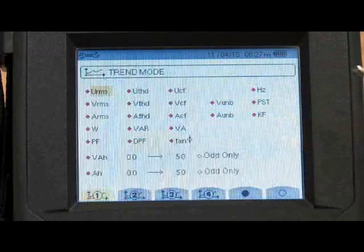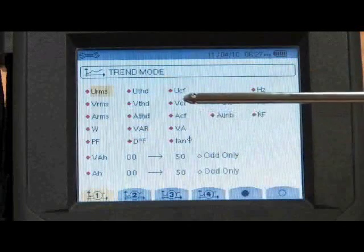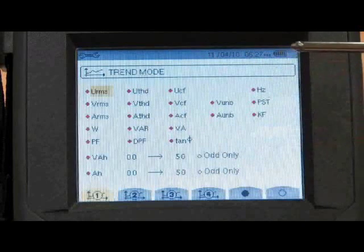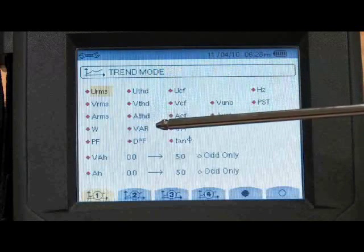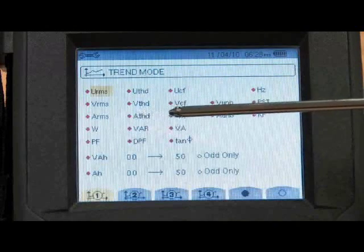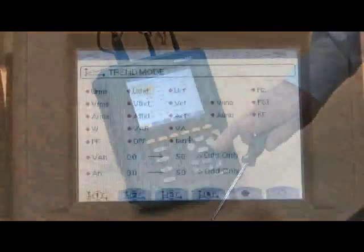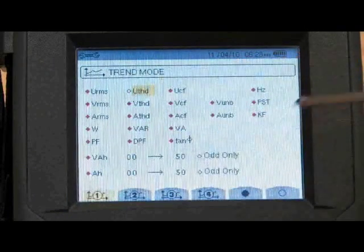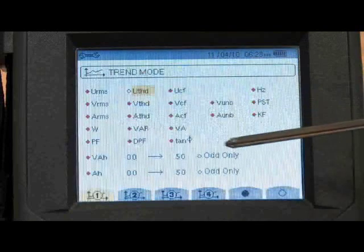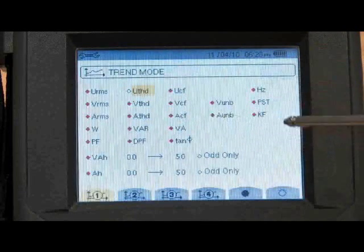In the trend mode that we talked about, this is where I can pick those parameters that we want to record. As you can see from this screen here, there are a multitude of parameters that we can record. The ones that show up as a red diamond have been selected for recording. To unselect the channel, I simply go to it, press the enter key, now that red diamond turned into a white diamond. So I can pick up to any one of 22 parameters or all 22 parameters to record in the trend mode.